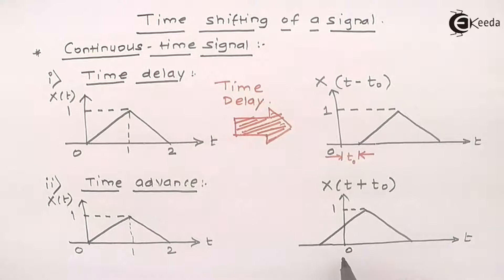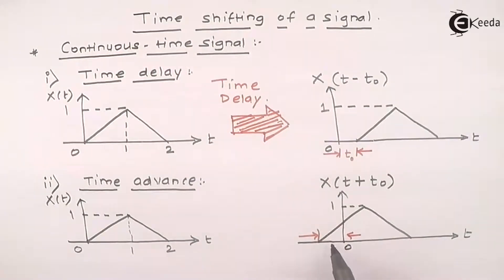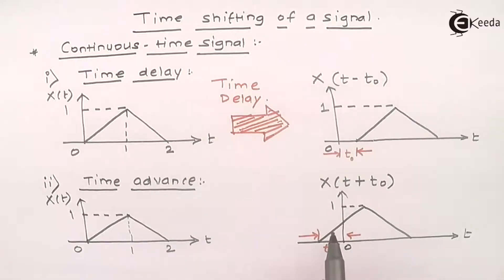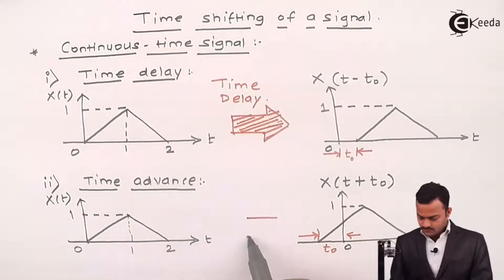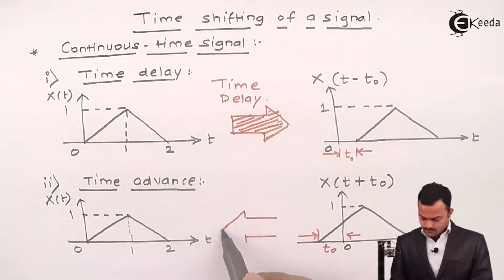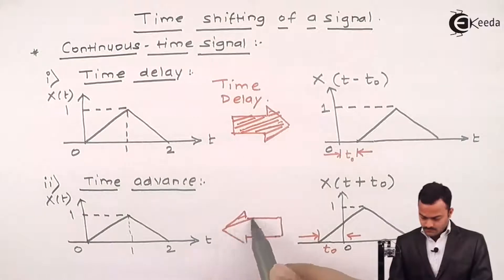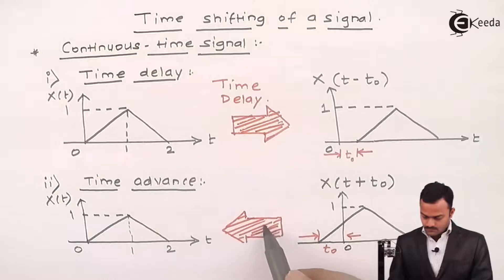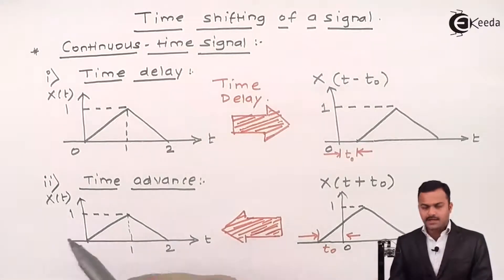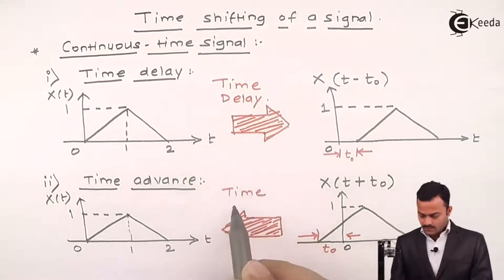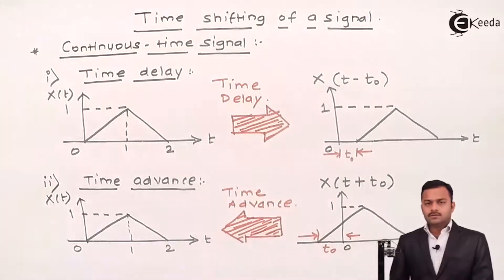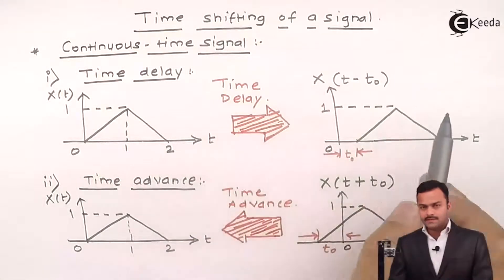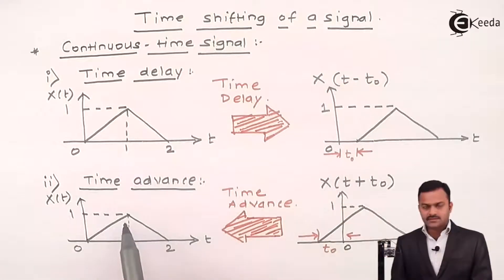Now what happened here is the signal has already started. If we consider 0 as a reference, before 0 by a time t₀ the signal has already started. So if you see the movement of the signal, it is in the leftward direction — meaning the original signal is shifted towards the left, which we call time advance. So in other words, if the signal shifts to the right it is a time delay; if the signal shifts towards the left it is a time advance.